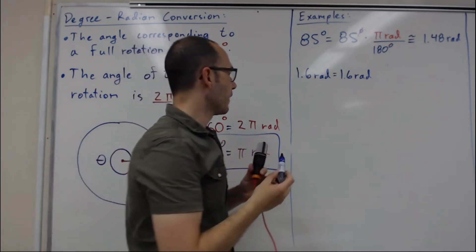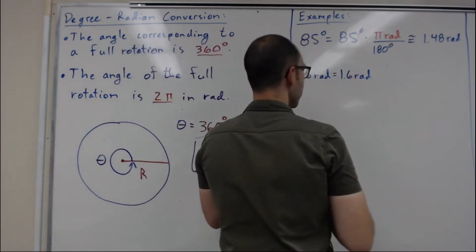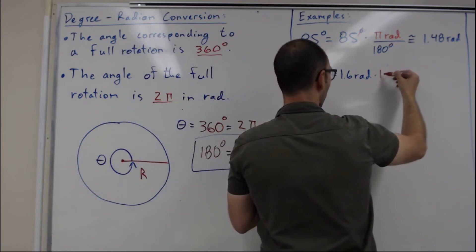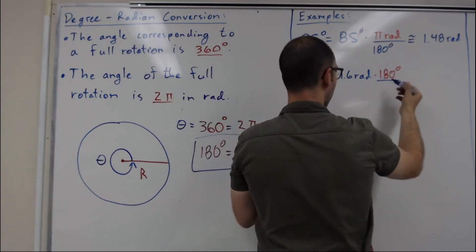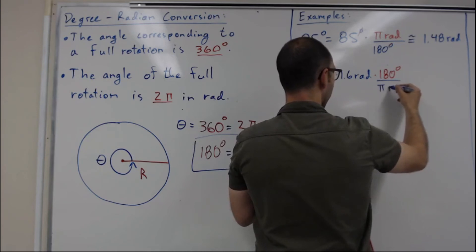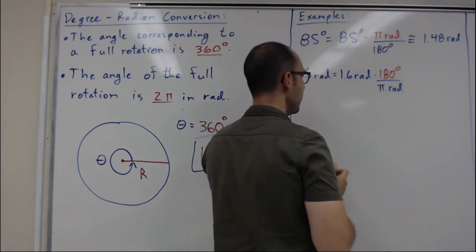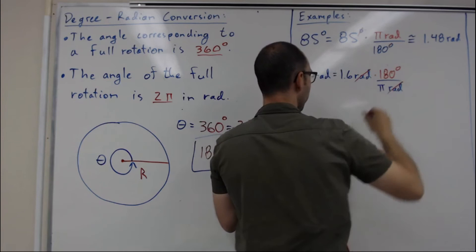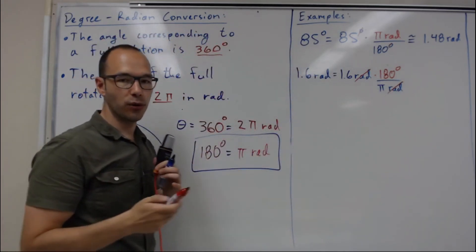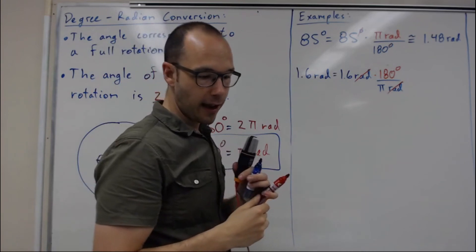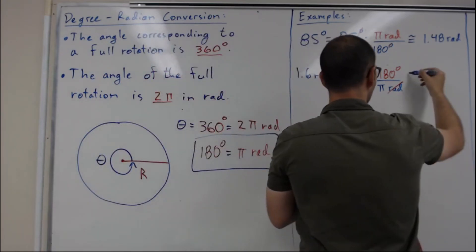For the second example, 1.6 radians, I'm going to multiply that by 180 degrees divided by π radians. This will cancel out the rad units, and I'm going to get 91.67 degrees.